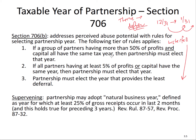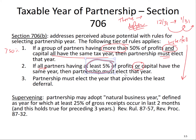The first rule: if a group of partners with greater than 50% of both profits and capital all have the same tax year, then that is the year the partnership must use. Second test: if all partners that have at least 5% of capital or profits have the same year, then you must elect that year.